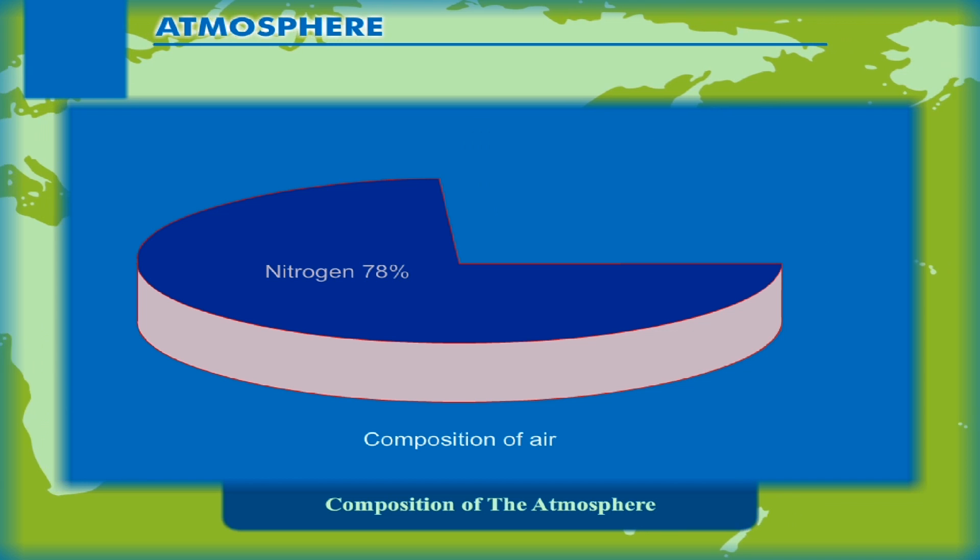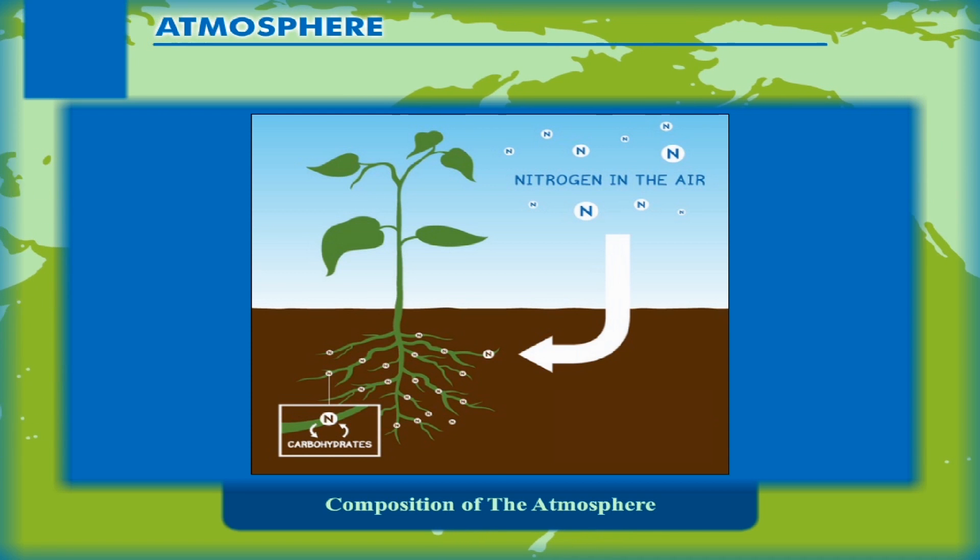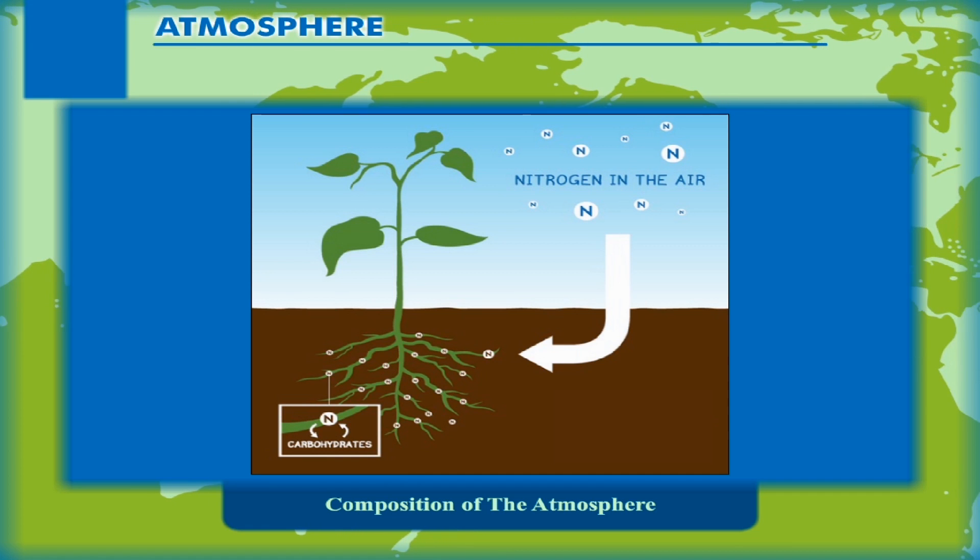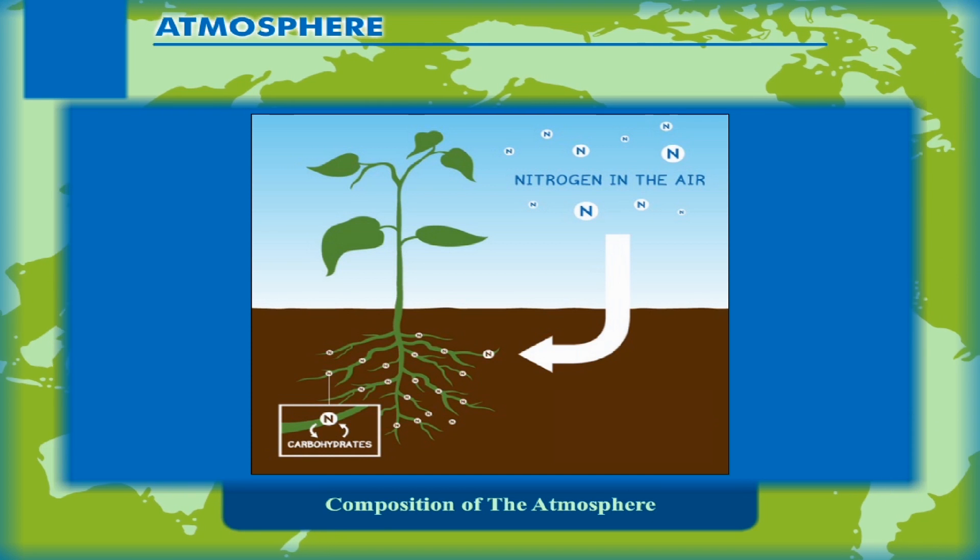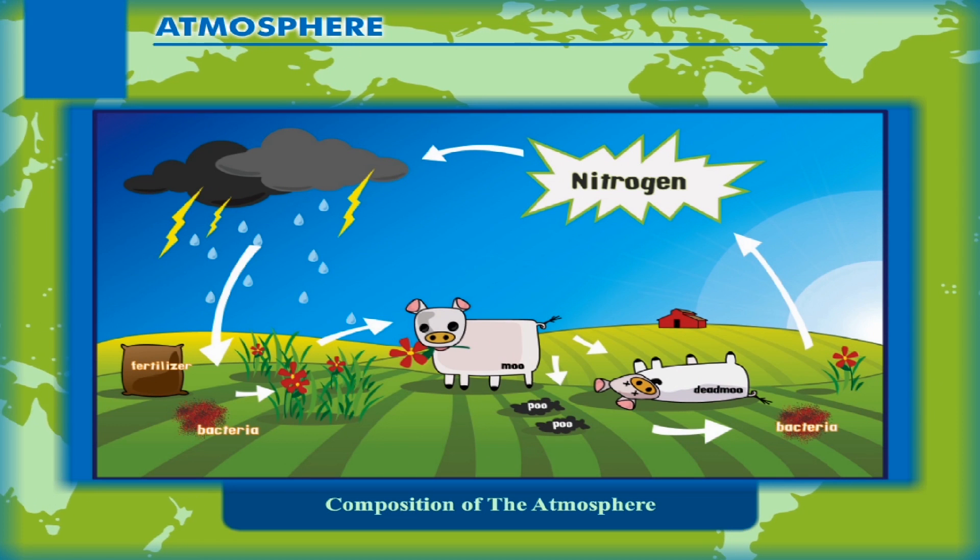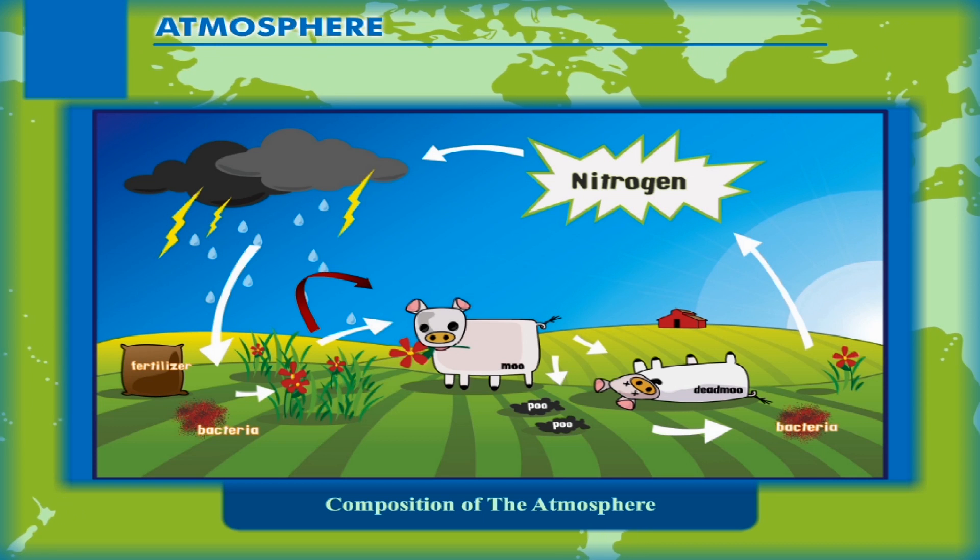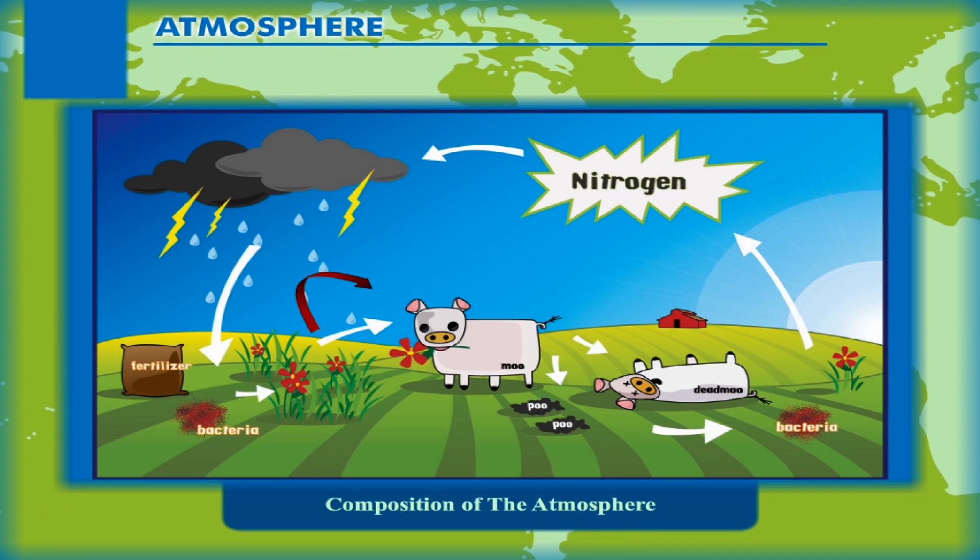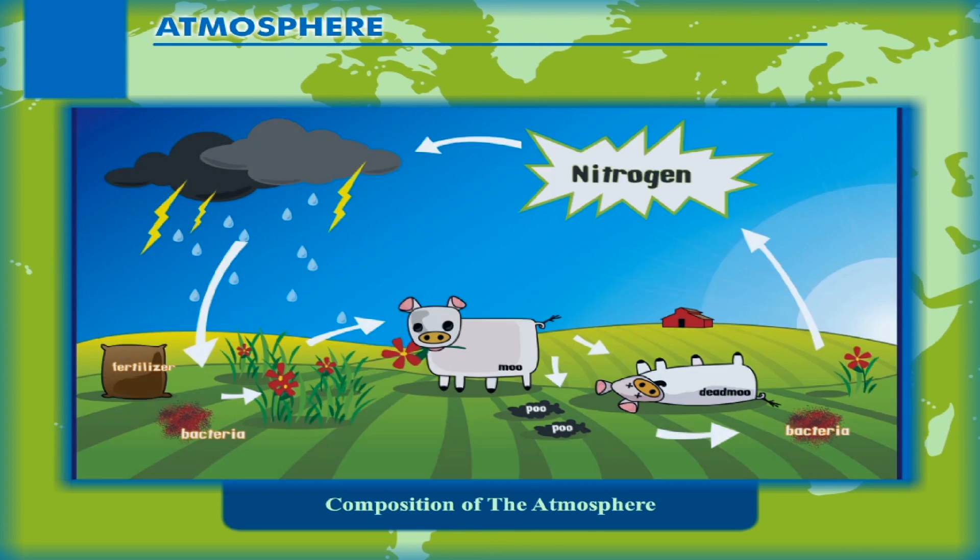Nitrogen, the most abundant gas, is useful for the survival of plants. Atmospheric nitrogen is converted to nitrogen compounds by nitrogen-fixing bacteria present in soil. Plants absorb nitrogen compounds and convert them to proteins. Animals take in proteins by eating plants or other animals. Nitrogen returns to the atmosphere when denitrifying bacteria act on animal wastes and the dead bodies of plants and animals.